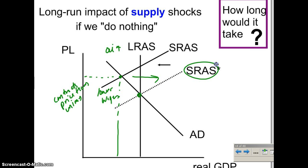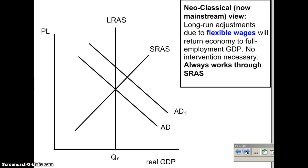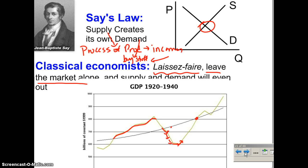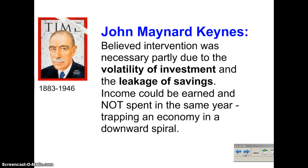To summarize: long-run adjustments due to flexible wages will return the economy to full employment GDP, and no intervention is necessary. Now, John Maynard Keynes came along during the Depression and published his most famous book in 1936. He believed that intervention was necessary — he wasn't willing to say the economy would fix itself. Two main components of his view were investment and savings.